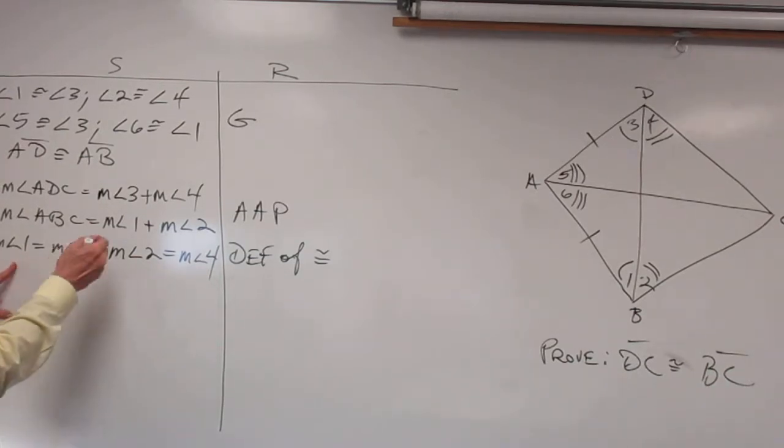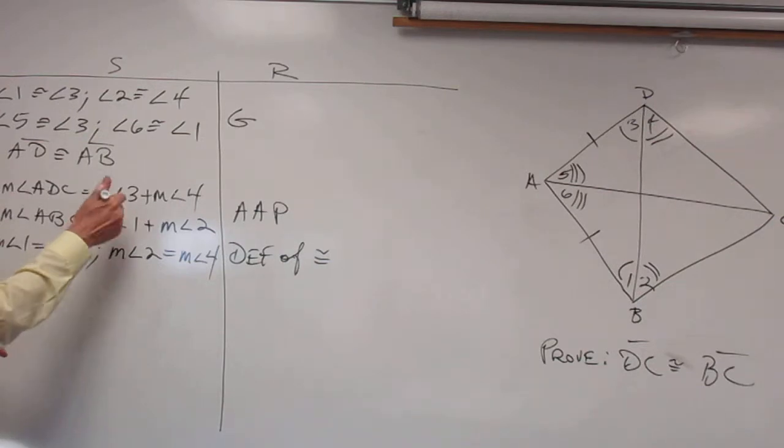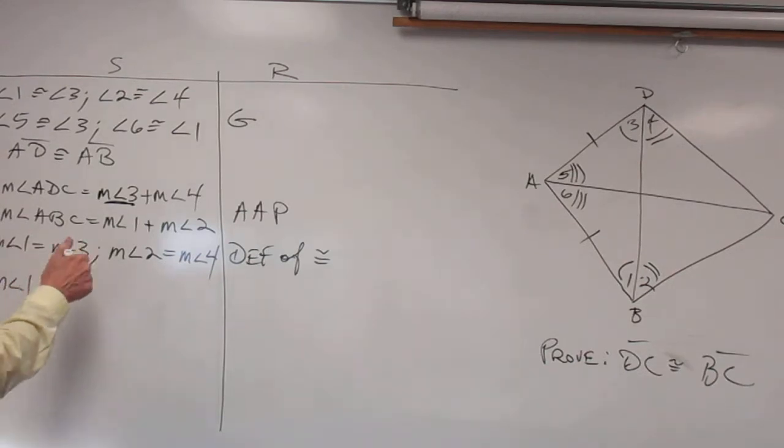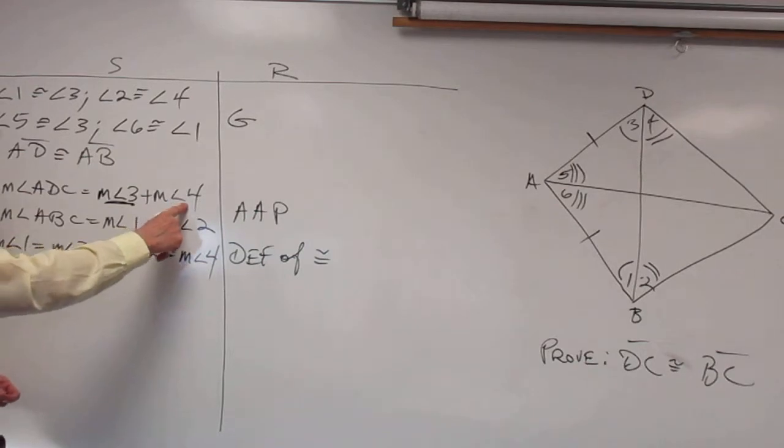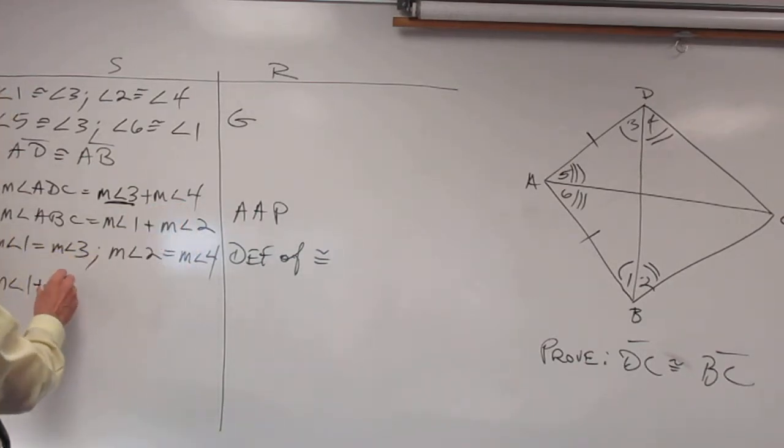Measure of angle 1 and 3 are the same. So if I could substitute measure of angle 1 in place of measure of angle 3, so measure of angle 1 plus, then 2 and 4 are equal, so I could substitute 2 for 4, plus measure of angle 2 is equal to the measure of angle ADC.